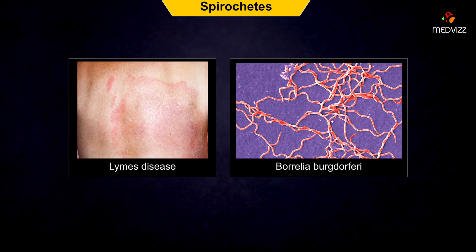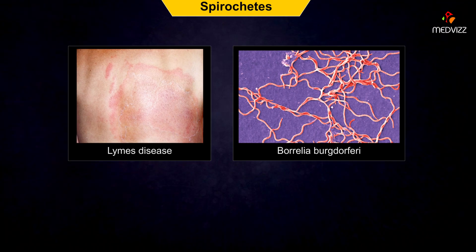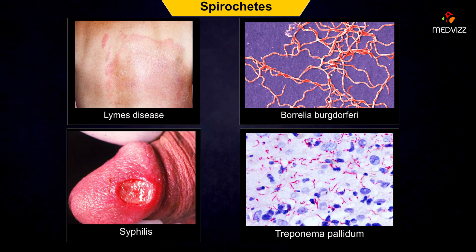Lyme disease is caused by a spirochete called Borrelia burgdorferi. Another spirochete, Treponema pallidum, causes syphilis.